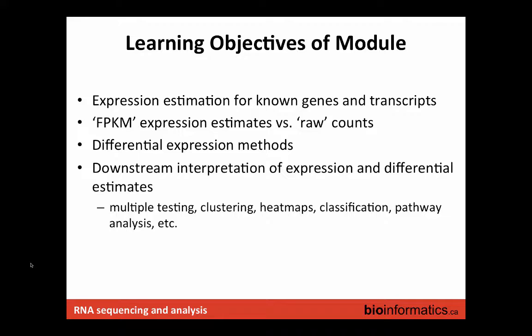Later we'll talk about estimation for potentially novel isoforms. We'll briefly review some of the differences between FPKM expression estimate approaches versus the raw count strategies, look into the differential expression methods, and then talk a little bit about some of the downstream interpretation steps. Unfortunately we don't cover those very well in this course because we just kind of run out of time.